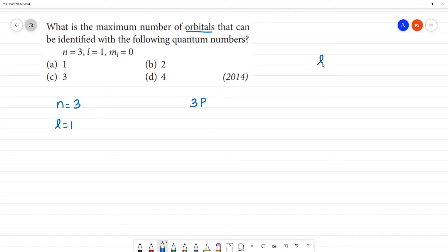That is l is equal to 0 is s, 1 is p, 2 is d, 3 is f. Right? For p substitution.